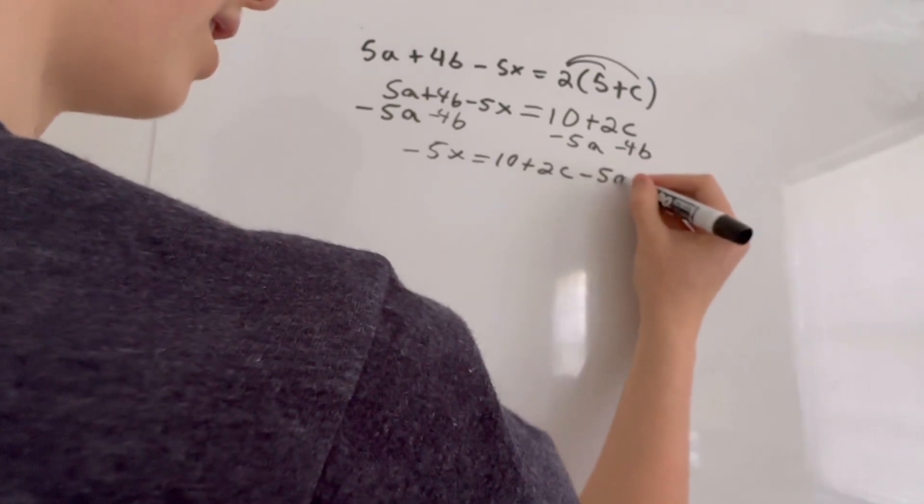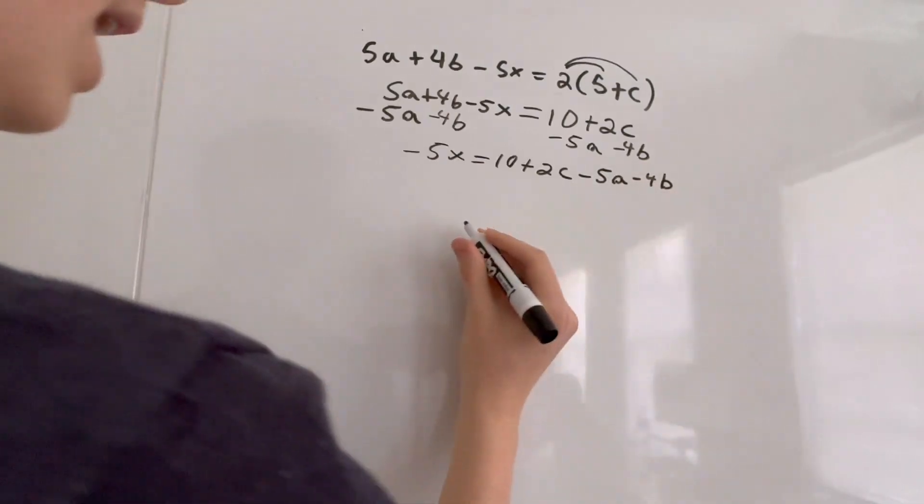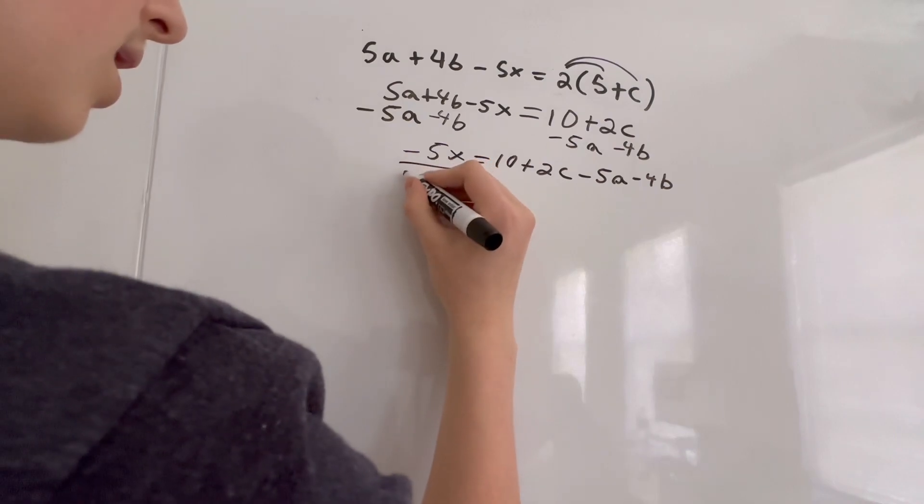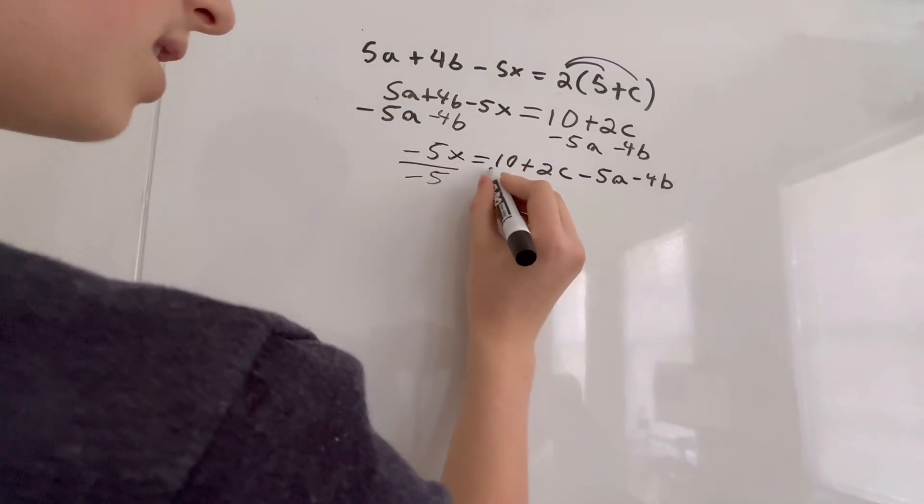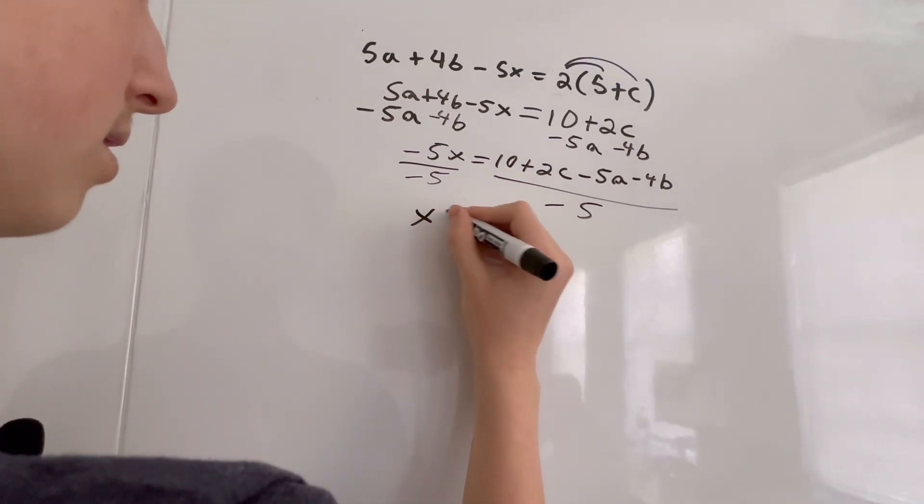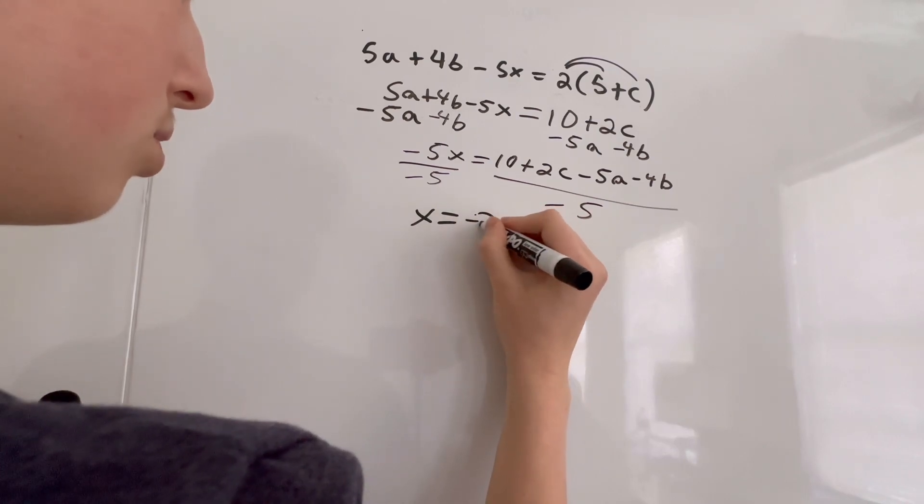So we have negative 5A minus 4B. And then what we have to do to isolate X is to divide by negative 5. So we divide this by negative 5. We have to divide this by negative 5. And we have X equals 10 over negative 5 is negative 2.